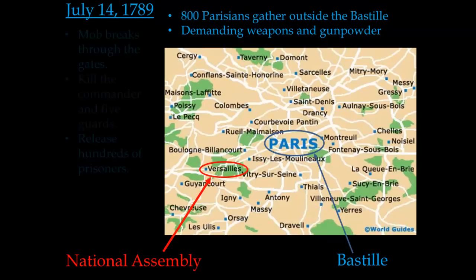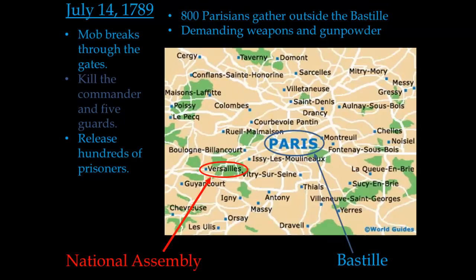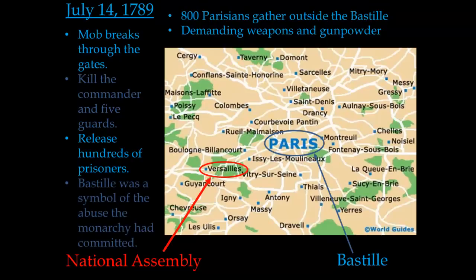They're demanding weapons and gunpowder. The mob is going to break through the gate, overrun the commander and some of the guards, killing some of them. They actually release hundreds of prisoners. A big reason why this is important is the Bastille, to the third estate — especially the urban poor and even rural peasants — was a symbol of the abuse that the king and the monarchy had committed over the years. We can see tensions boiling over and leading to this march on this symbol of complete oppression.